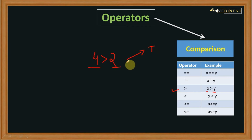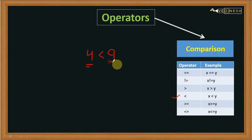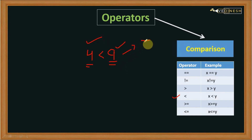Up next we have the less than operator. It compares the value on LHS with the value on the right hand side. If the value on the right hand side is greater than the left hand side, then it will return true, otherwise it will return false.